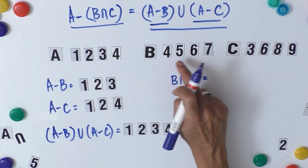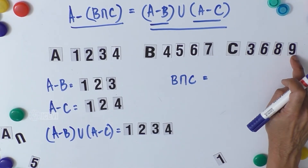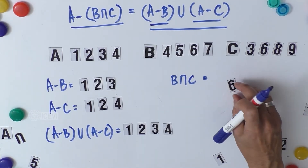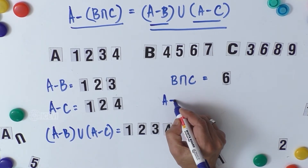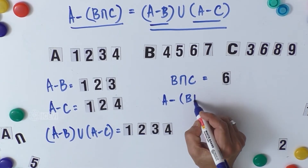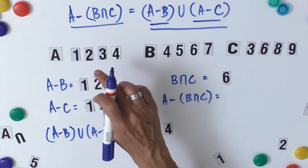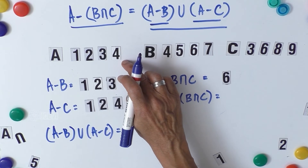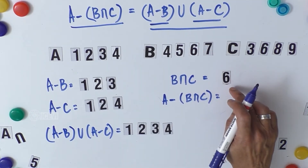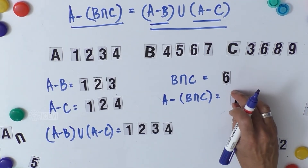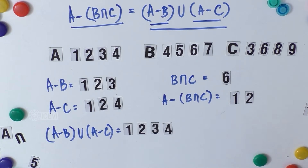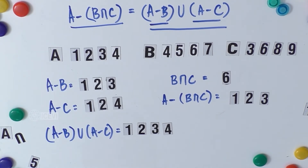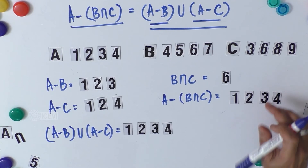Now let us find B intersection C. B = {4,5,6,7} and C = {3,6,8,9} — the only common element is 6, so B intersection C = {6}. Therefore A minus (B intersection C) means the objects of A not found in {6}. Since none of A's elements equal 6, A minus (B intersection C) = {1, 2, 3, 4}.